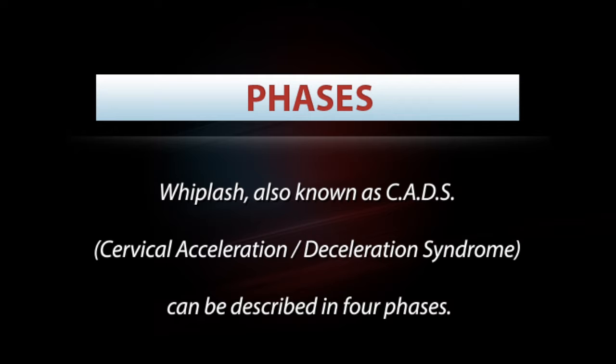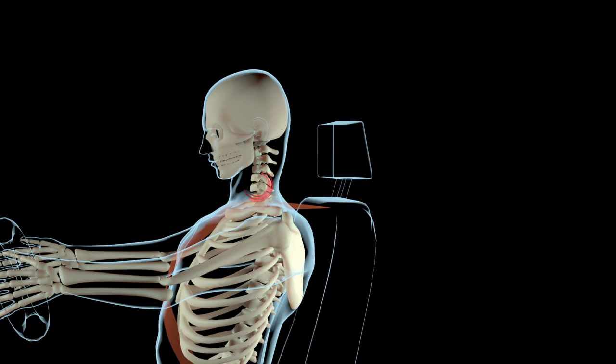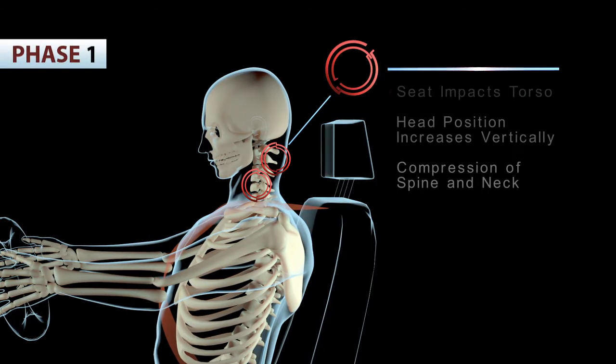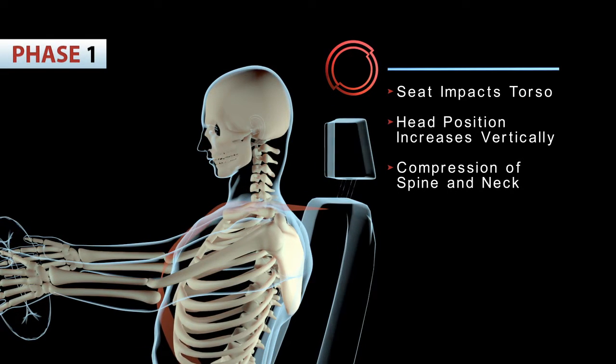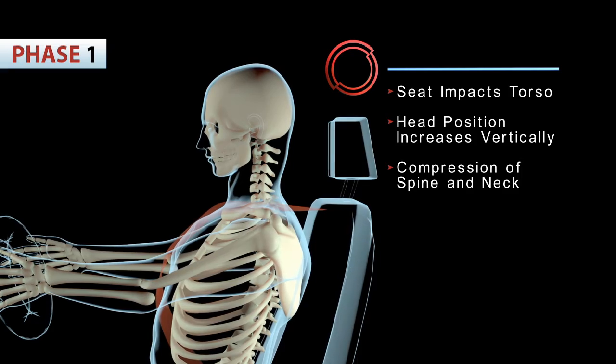In phase one, the seat impacts the torso. The head position increases vertically and an abnormal S-curve develops in the cervical spine.